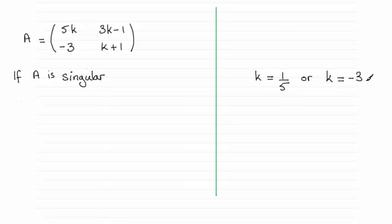So if this caused any problems, I'll just take you through the method. First of all, if A is singular, that means the determinant of this matrix must equal 0. So if we set that determinant equal to 0, we should be able to go on and solve the equation that we get for k.